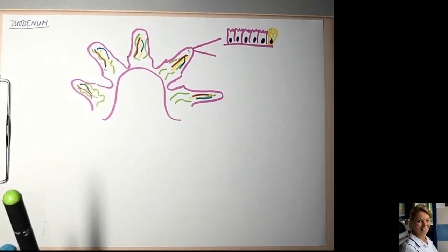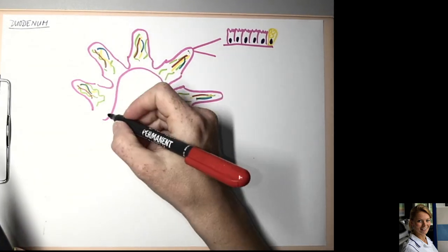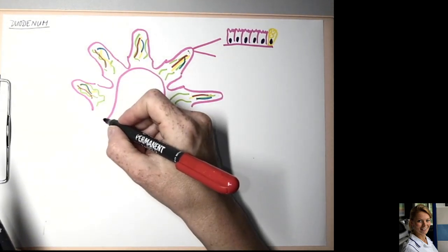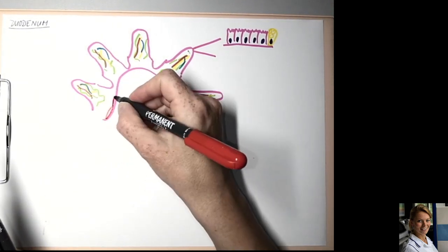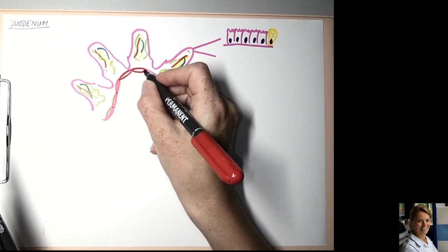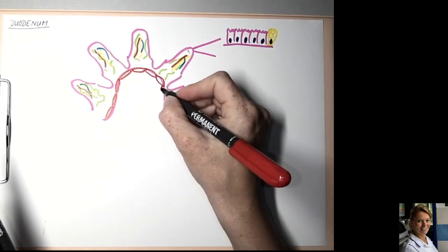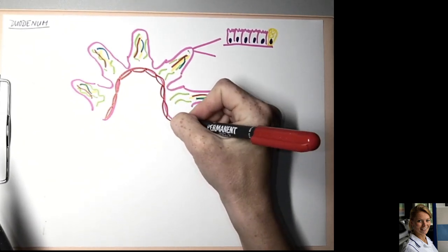The last layer of mucosa is lamina muscularis mucosa, which is formed by smooth muscle cells. Lamina muscularis mucosa forms the border between mucosa and submucosa.